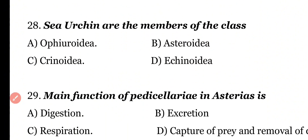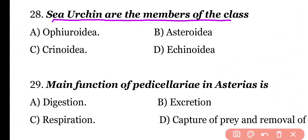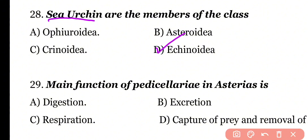Question 28: Sea urchins are members of the class Ophiuroidea, Asteroidea, Crinoidea, or Echinoidea? Correct answer is Option D. Sea urchins belong to class Echinoidea.